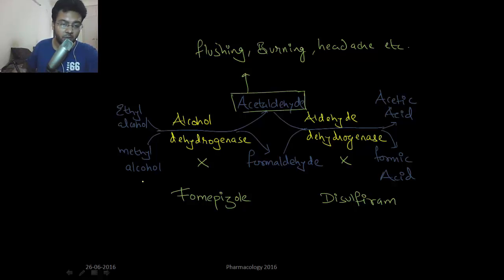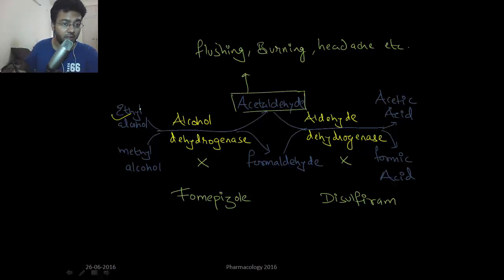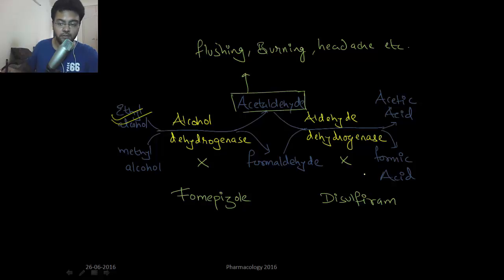Fomepizole inhibits alcohol dehydrogenase, which is helpful in methyl alcohol poisoning, because you don't want formic acid to accumulate. But the mainstay of treatment in methyl alcohol poisoning is giving ethyl alcohol. If you give ethyl alcohol, that will saturate the enzyme — there'll be no alcohol dehydrogenase available to convert methyl alcohol into formaldehyde, and hence there'll be no formic acid formation.